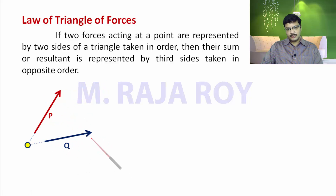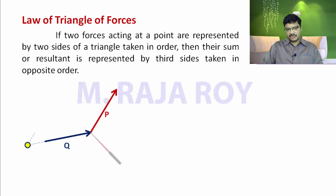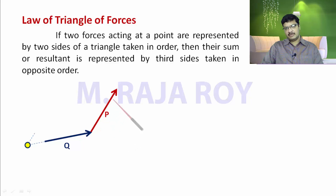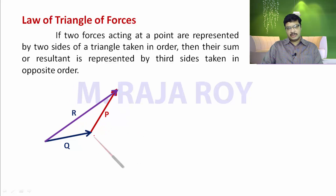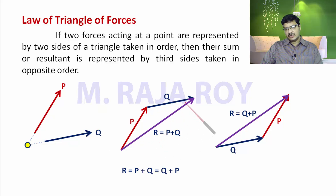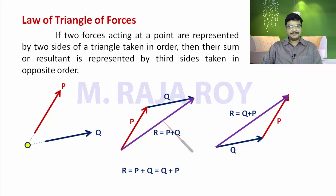Now I will do it the other way: first start with Q, then P, then the resultant. Taking Q at 20 degrees, then draw a 60 degree line for P with its magnitude. The order follows the same rule — join the closing side in the reverse order for the resultant. In both methods we get the same answer; both lengths are the same. In this way, graphically you can find the resultant of two forces using the triangle method. This triangle method is applicable only for finding the resultant of two forces.